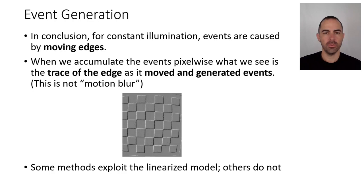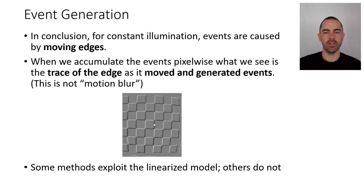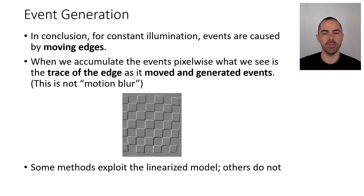In conclusion, for constant illumination, events are caused by moving edges in the scene — as shown by the linearized model. When we accumulate events pixel-wise, we see the trace of the edge as it moved and generated events, such as white and black lines in the event frame. These accumulated events have almost no motion blur; they simply represent the trace of the edge as it moved.